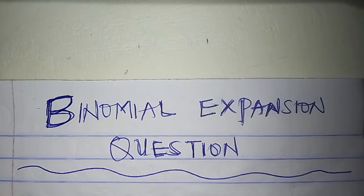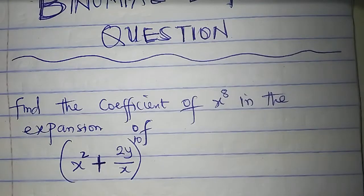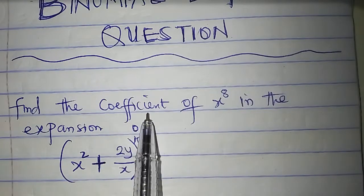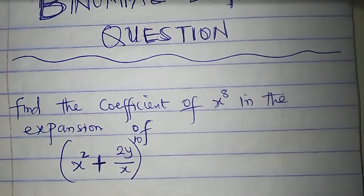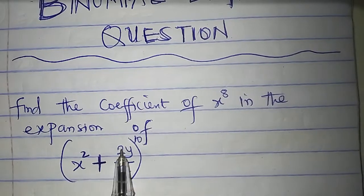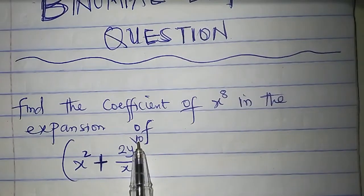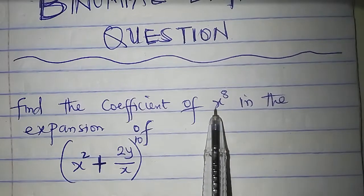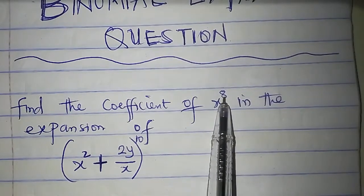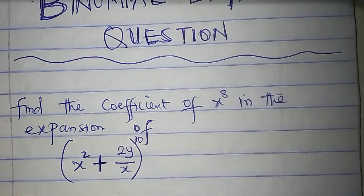In this video, I'll be solving a question and I'll use the question to explain how to find the coefficient of a particular term in a binomial expansion. The question says: find the coefficient of x to the power of 8 in the expansion of (x squared plus 2y all over x) all to the power of 10. So we just need the coefficient of x to the power of 8.